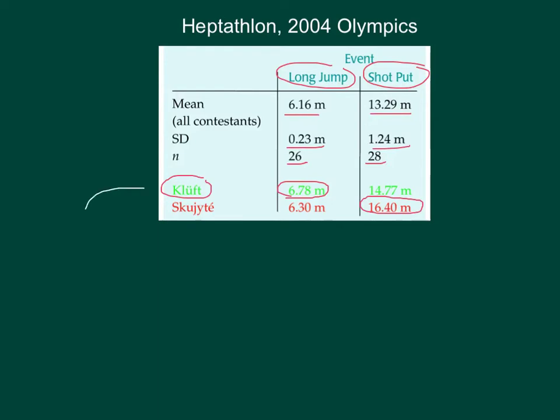For Kluft, we'll get her z-score for the long jump. Her z-score will be her actual long jump of 6.78 meters minus the mean, 6.16, all divided by the standard deviation for that event, which was 0.23. If you calculate that z-score on your calculator, you end up with the result of 2.7. So Kluft was nearly 3 standard deviations above the mean in the long jump.